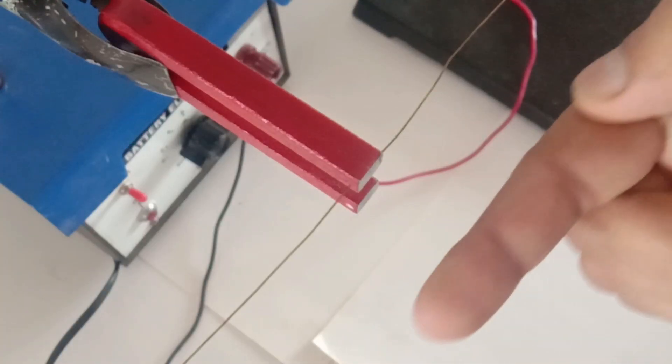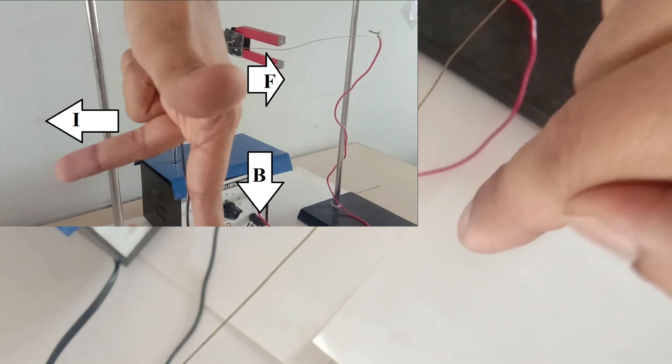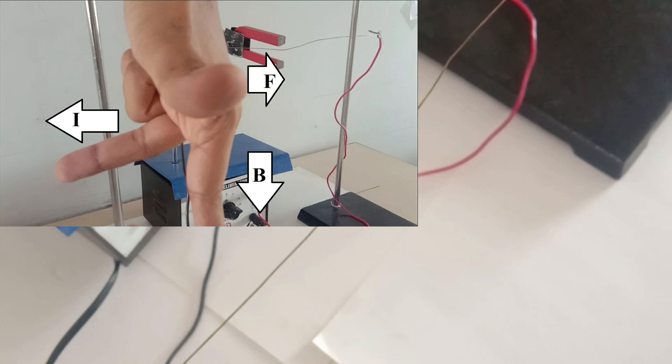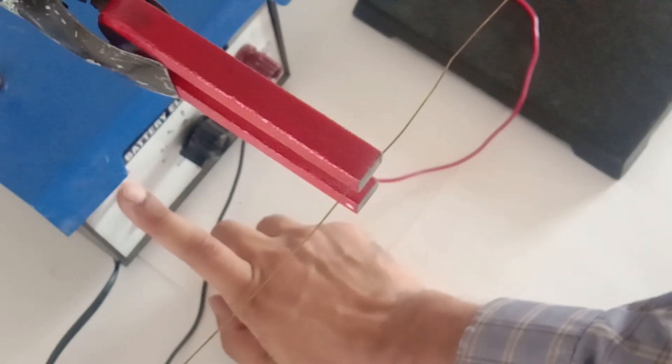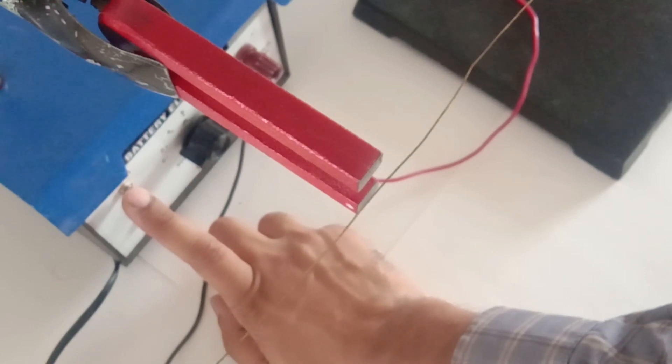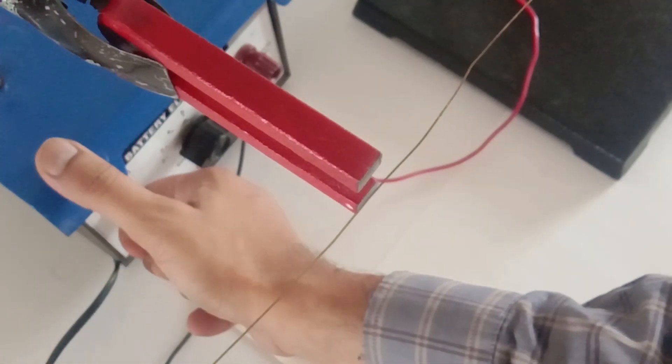Current in this direction, magnetic field in the downward direction, so the force should be in the outward direction. Let's switch on the battery. As expected, the wire is pushed outside which shows the force is in the outward direction.